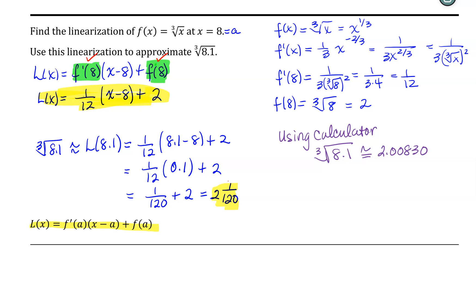Now, our linearization at 8.1, which was 2 and 1/120th, is approximately 2.00833.